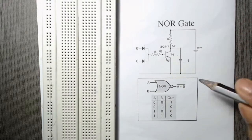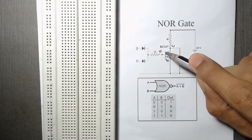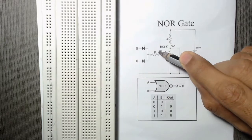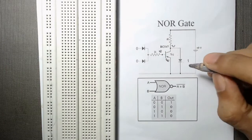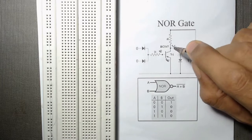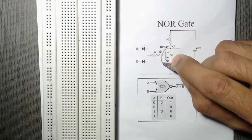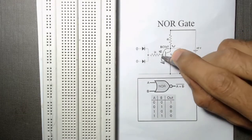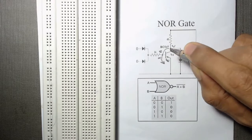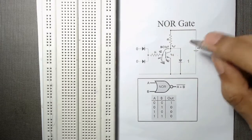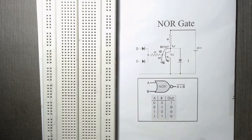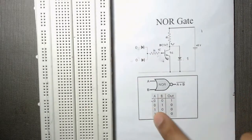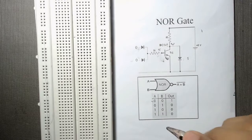Since we know that if there is no base voltage to an NPN transistor, then the transistor will not allow current to flow from collector to emitter. This technique is used to design this NOR gate. Let us see how, using the truth table of the NOR gate.